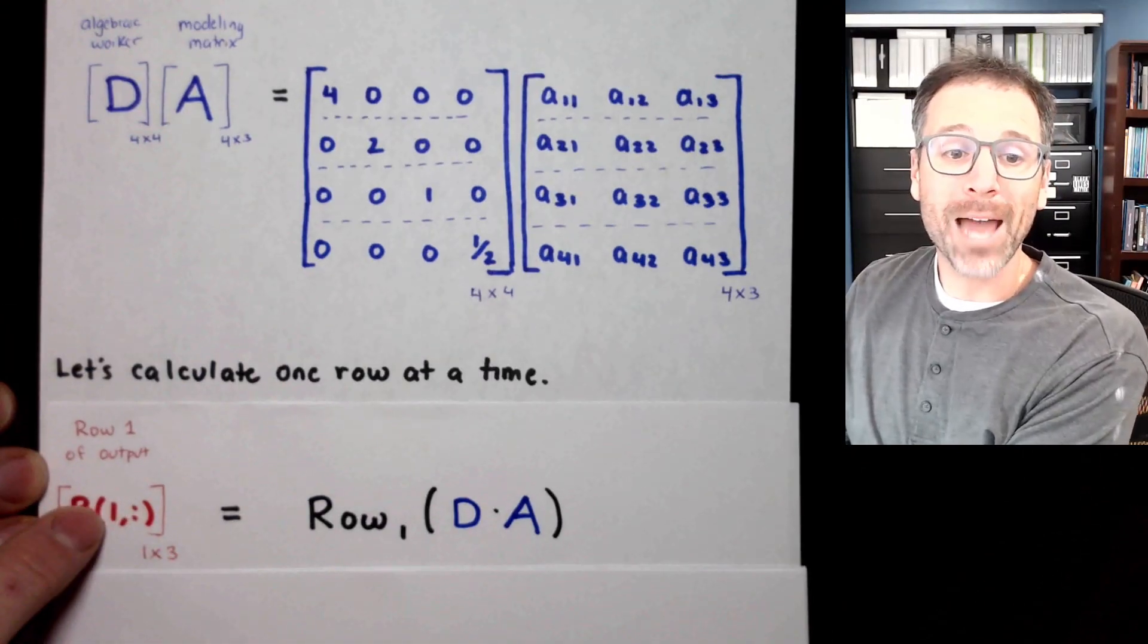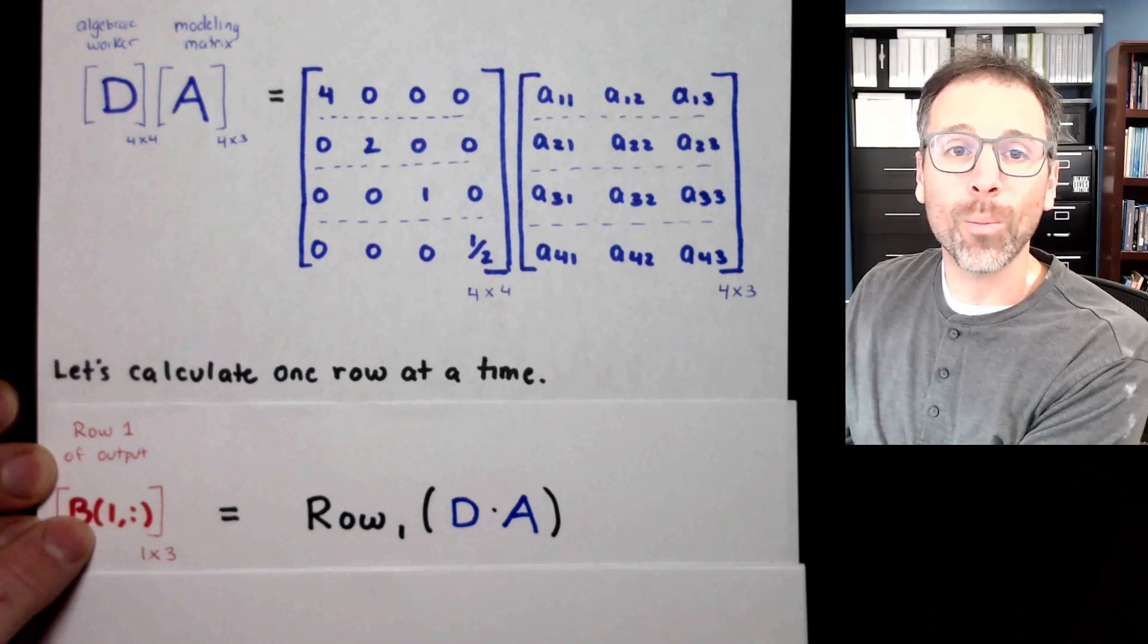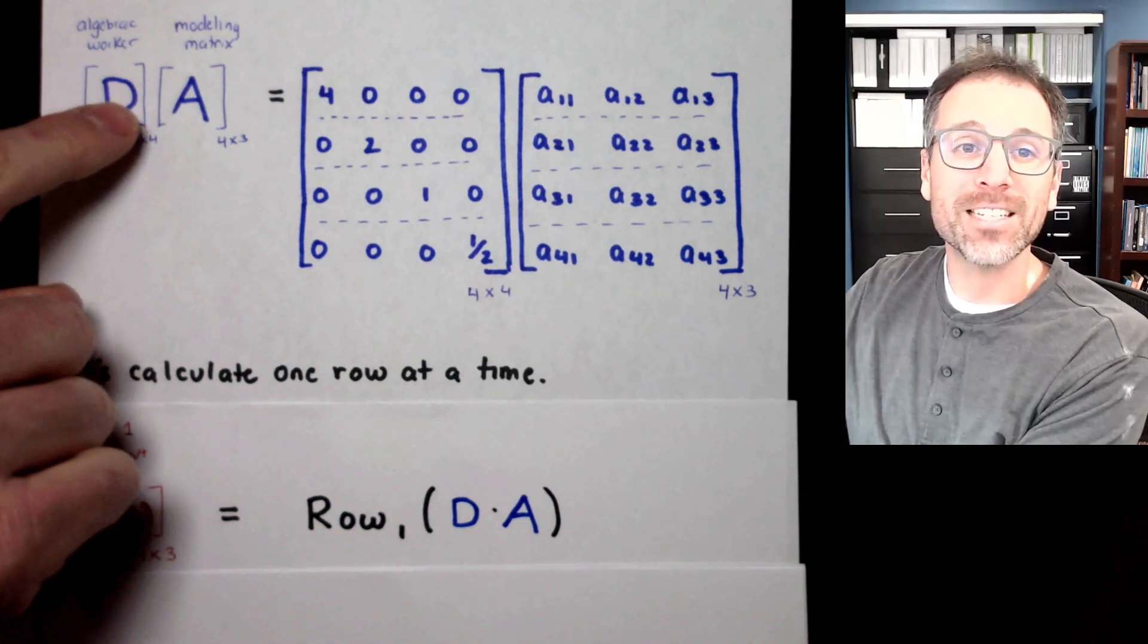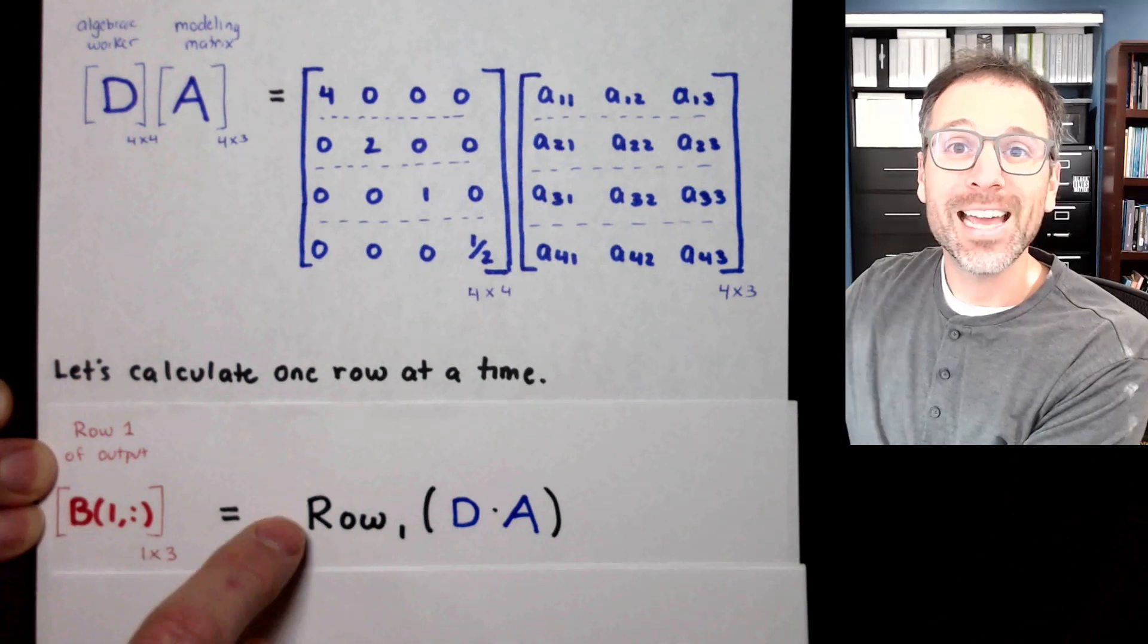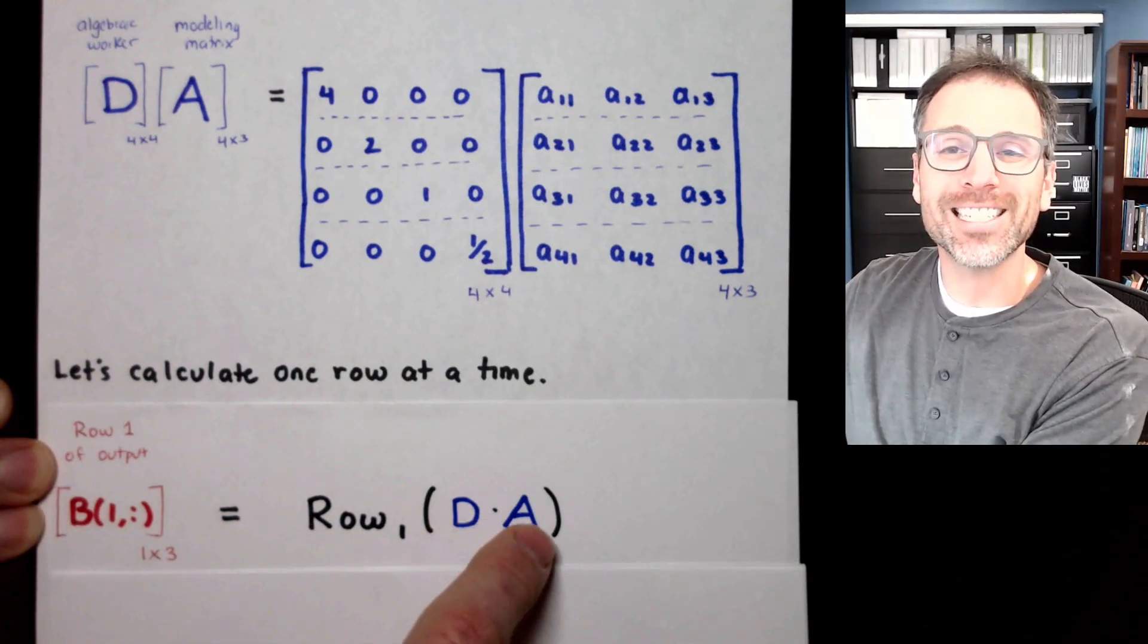Here, let's do one row at a time, and we'll start with the first row of our output B. So we say that B is equal to D times A. Row 1 of B, row 1 of the output, is going to be row 1 of the product D times A.